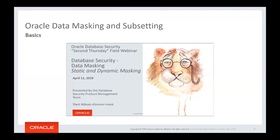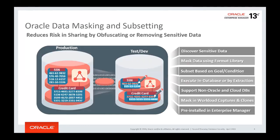Copying production data for non-production purposes proliferates sensitive data, expands the security and compliance boundary, and increases the likelihood of data breaches. Data left unprotected may be accessed by contractors or offshore workers and possibly moved across locations. Even in non-production environments, you need to protect sensitive data and stay compliant with regulations such as PCI DSS and GDPR. The recommended solution is to mask sensitive data before using it in non-production environments.